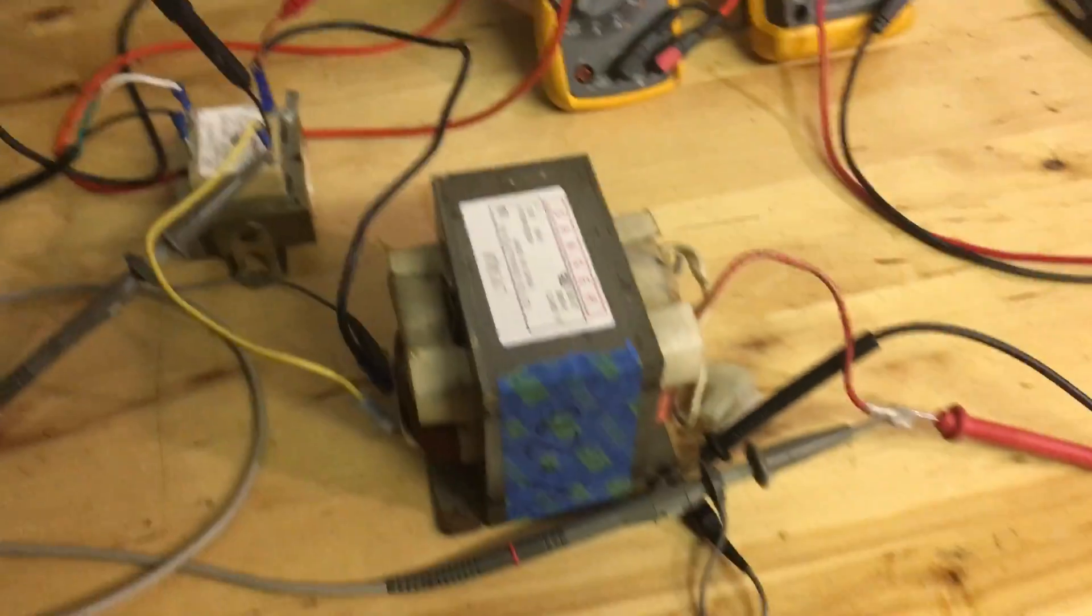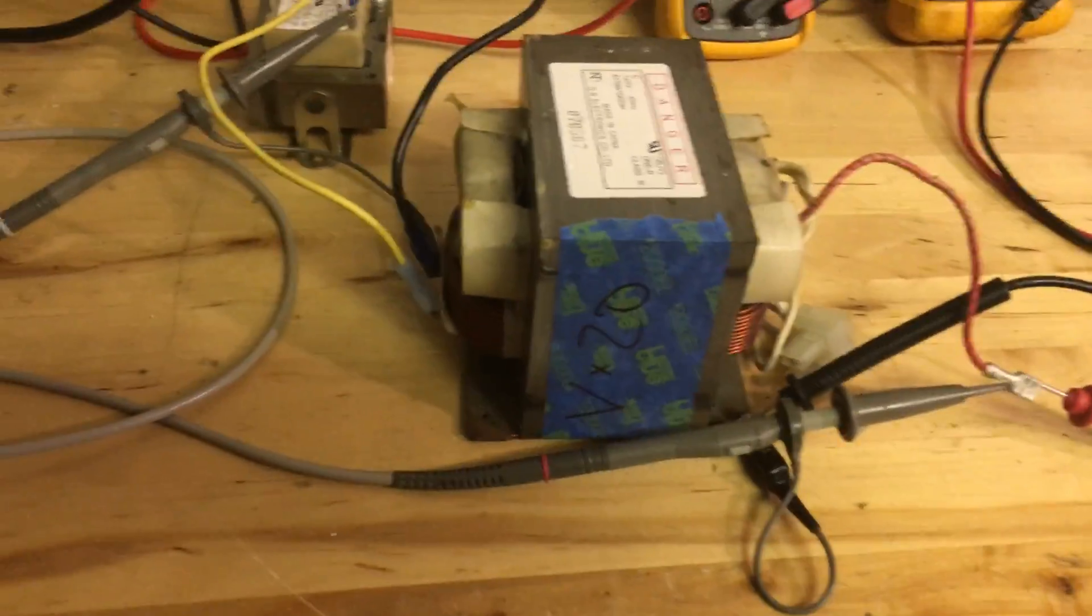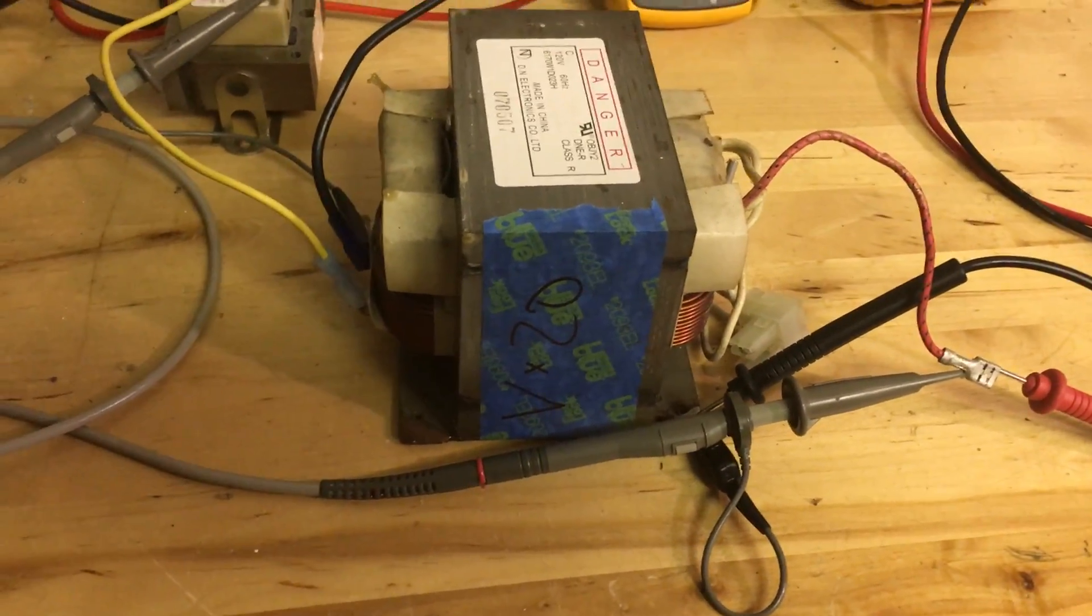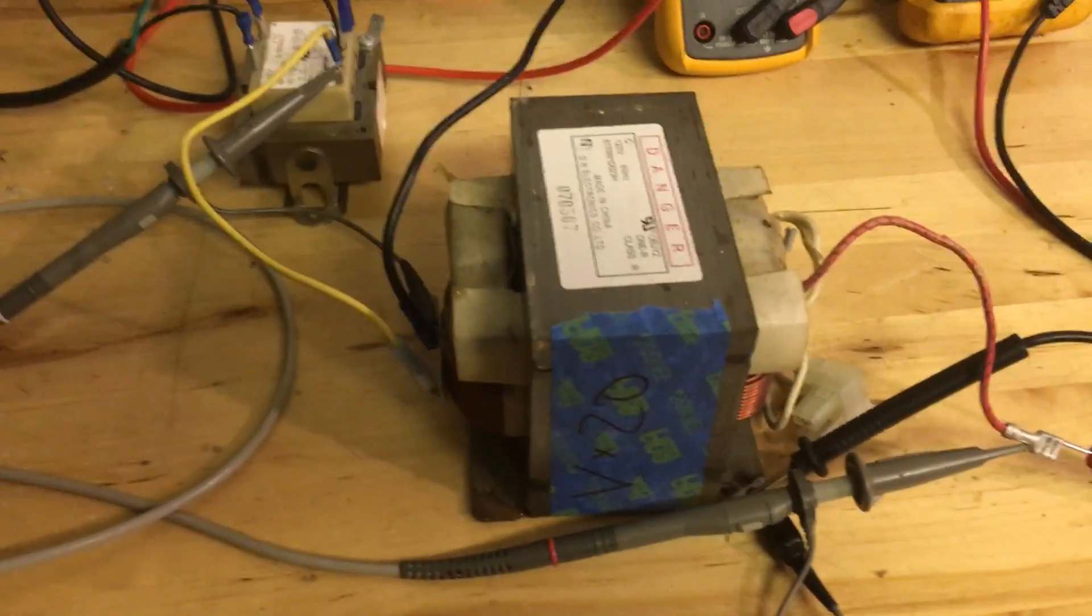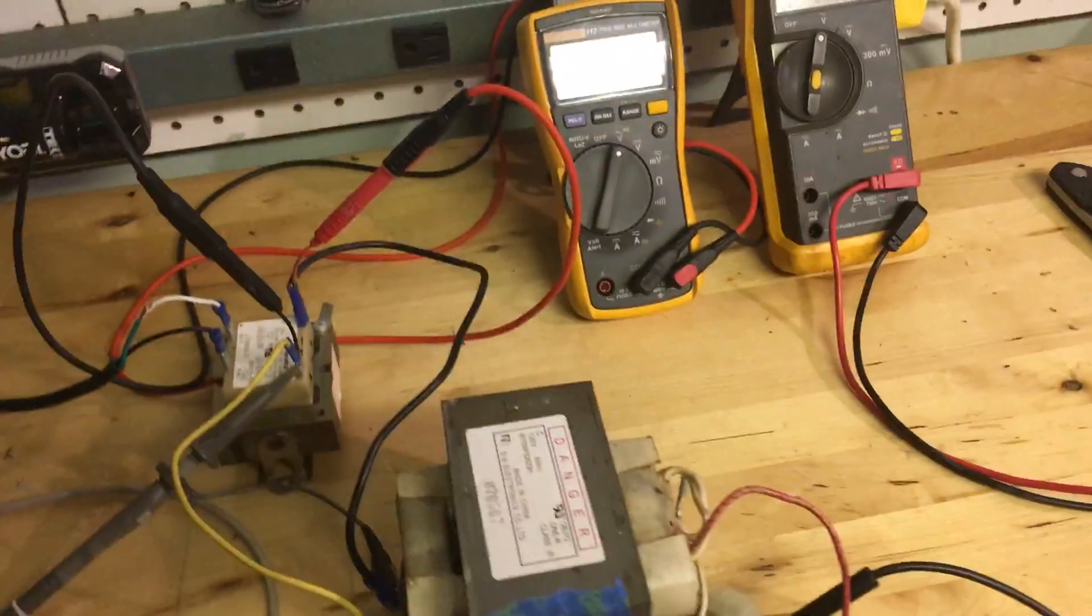I'm going to show you a way I figured out how to test a microwave transformer. You can see on the side it's V times 20, which is voltage times 20. So there's a lot of voltage coming out of these things when they're at full power.